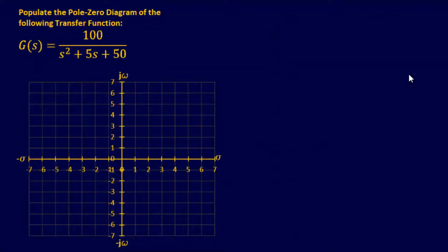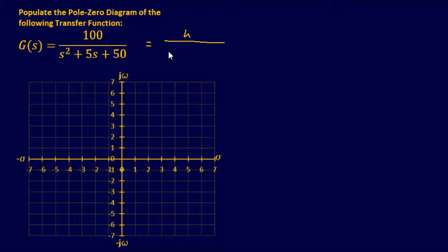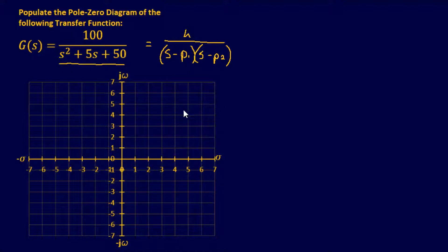The next problem is similar, but this transfer function mimics a second-order model as discussed. There don't appear to be any zeros on top — it seems to be just K. In the denominator we're looking for (s minus pole one)(s minus pole two). The way we find the roots is by applying the quadratic formula to the second-order denominator.